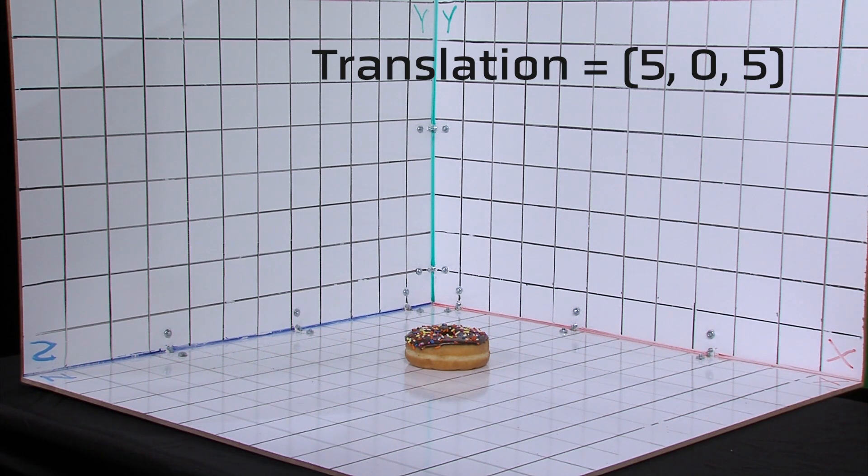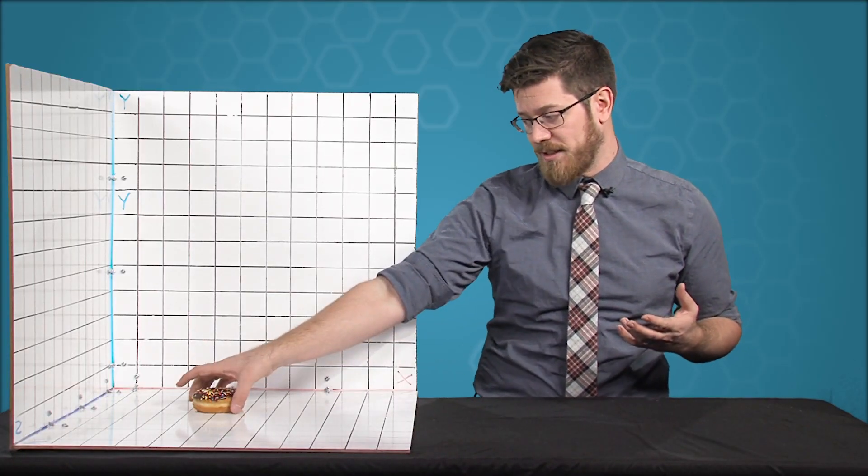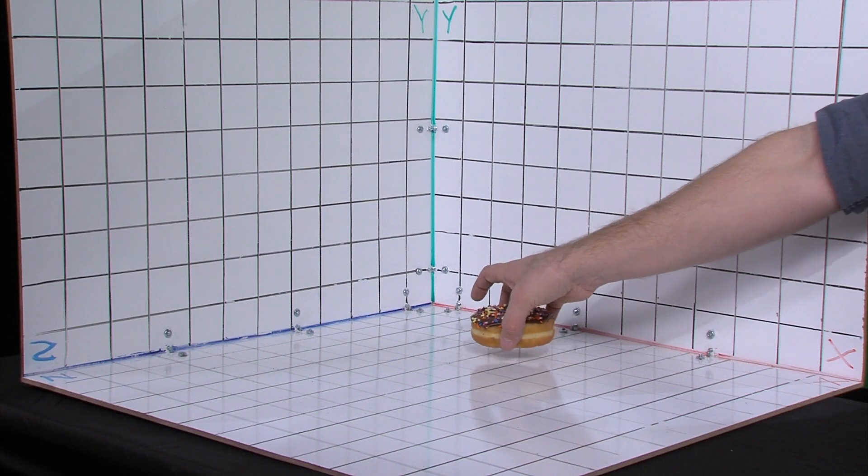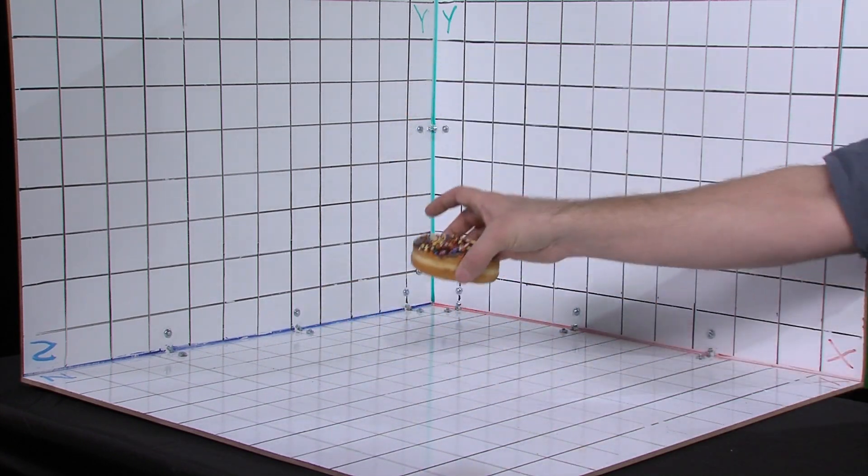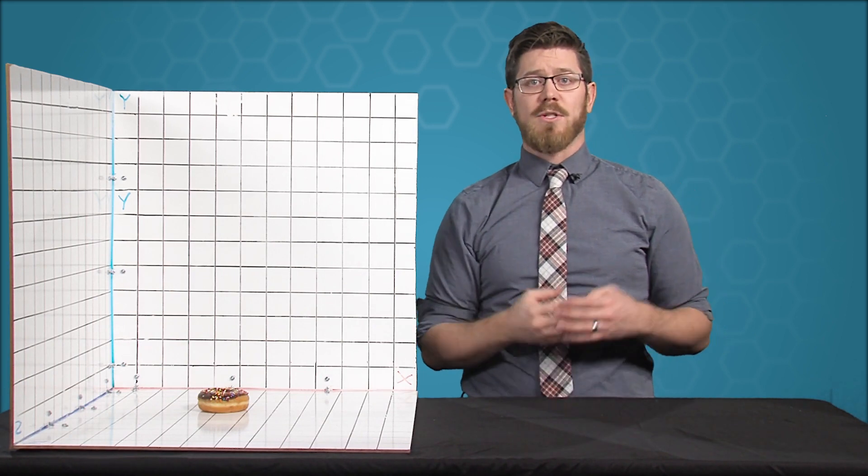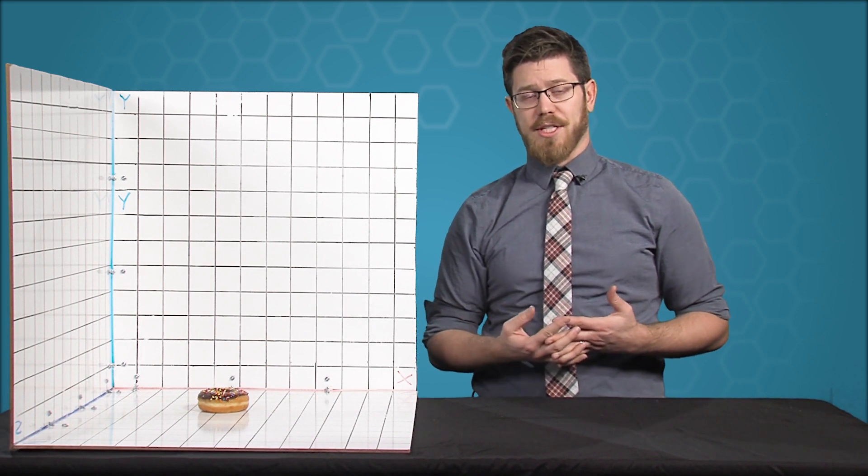We have translated the donut's position from its starting place at the origin. A translation can occur along just one axis, on two axes, or in three axes. Translation requires you to define three values for x, y, and z, even if some of the values are 0.